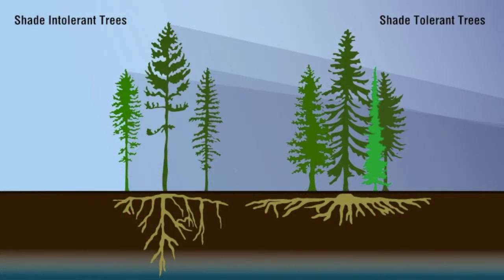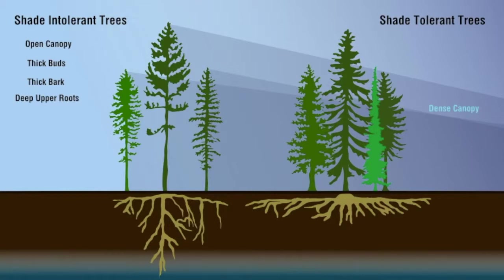These trees have different life strategies in any forested ecosystem. Shade-intolerant or sun-tolerant species such as ponderosa pine, larch, and lodgepole pine tend to have an open canopy to disperse the sun's heat, thick buds that don't dry out quickly, thick bark that keeps high surface temperatures away from living tissue, and deep upper roots. Alternatively, shade-tolerant species have a dense canopy to absorb all available sunlight, small fine buds in great numbers, thinner bark, and shallow upper roots to take advantage of the nutrient-rich duff layer that forms underneath a pioneer tree species.